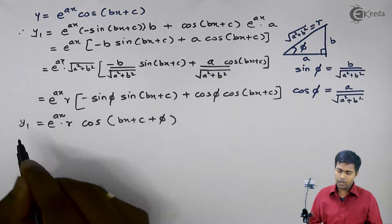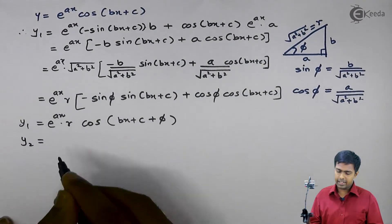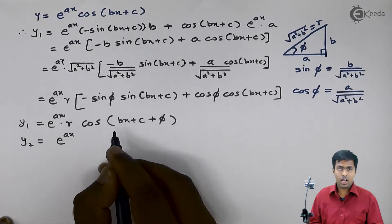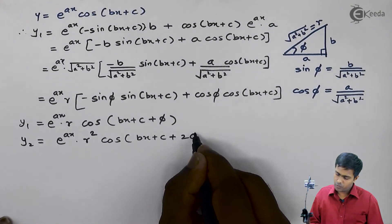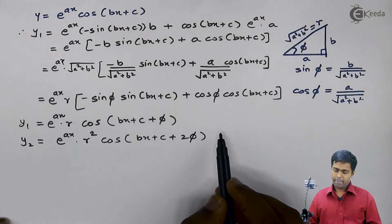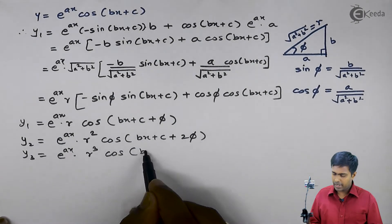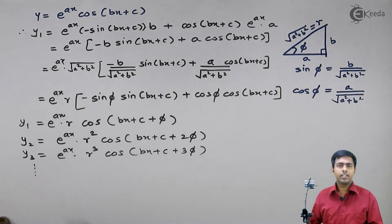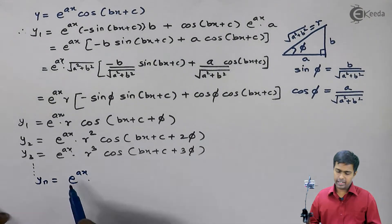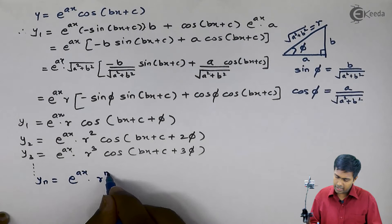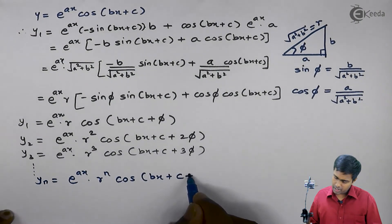We got the value of y1. Using the same triangle method to find y2, we get one more r and one more phi, giving r squared and cos of bx plus c plus 2 phi. For y3, we get e raised to ax times r cubed times cos of bx plus c plus 3 phi. We can now predict the value of yn: e raised to ax times r raised to n times cos of bx plus c plus n phi, since the power of r and the multiple of phi both match the order of the derivative.